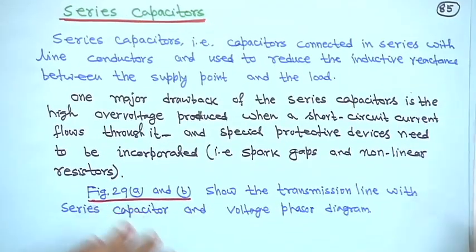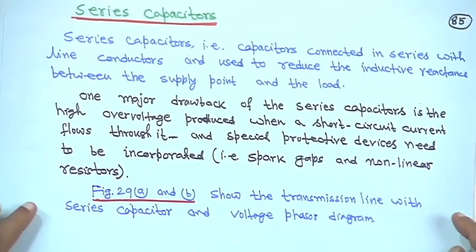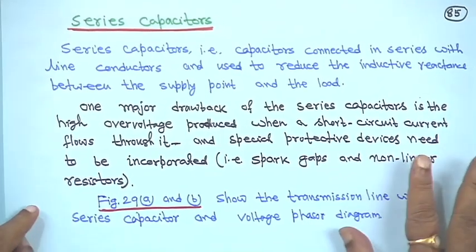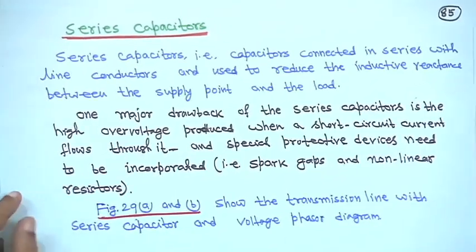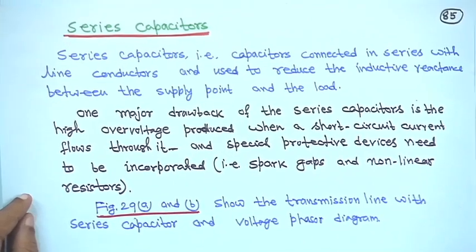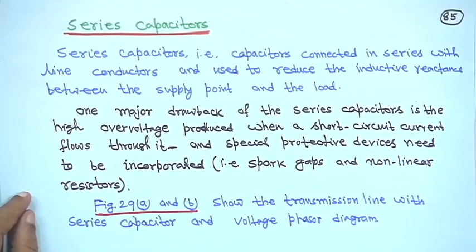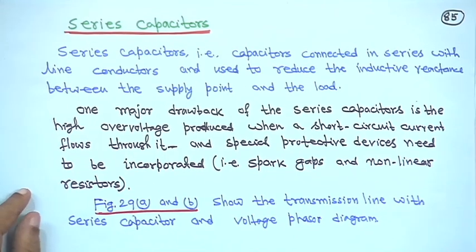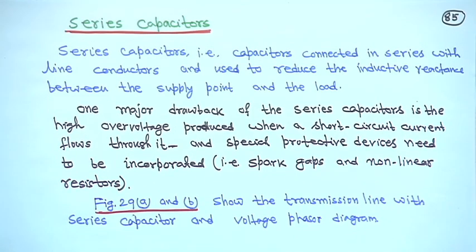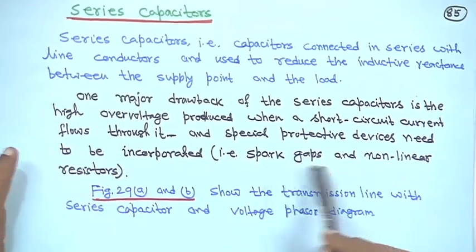Next is the series capacitor. A series capacitor is connected in series with the transmission line so that the inductive reactance is compensated by the capacitive reactance. Resonance is another problem for series capacitors. One major drawback of the series capacitor is the high overvoltage produced when a short-circuit current flows through it. Special protective devices such as spark gaps and non-linear resistors need to be incorporated.